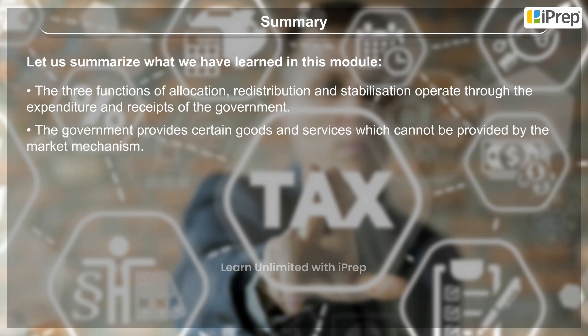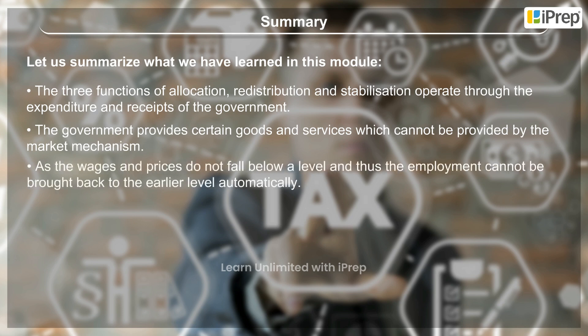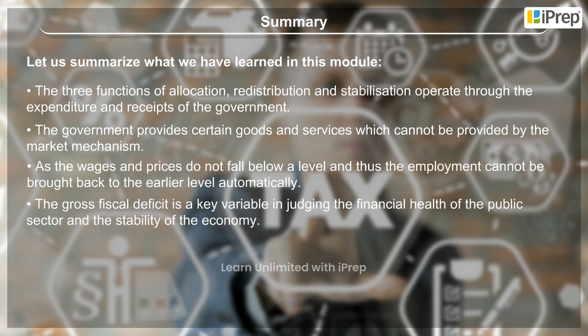The government provides certain goods and services which cannot be provided by the market mechanism, as wages and prices do not fall below a level and thus employment cannot be brought back to the earlier level automatically. The gross fiscal deficit is a key variable in judging the financial health of the public sector and the stability of the economy.